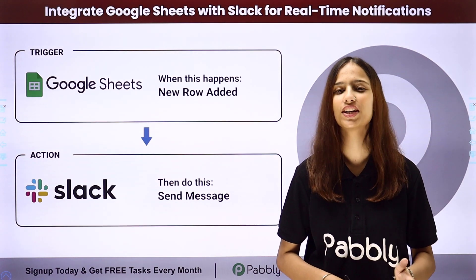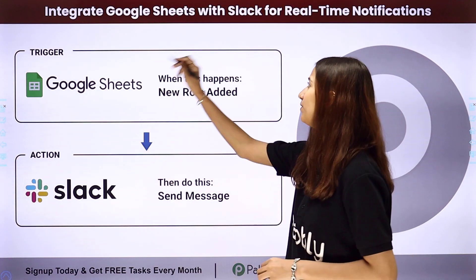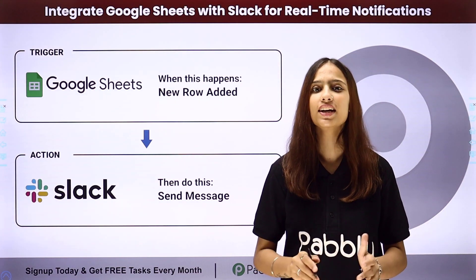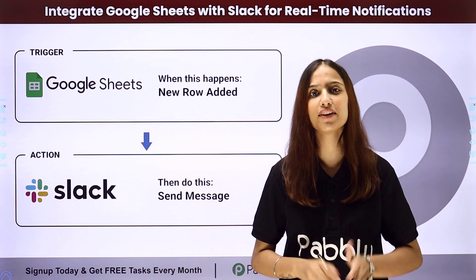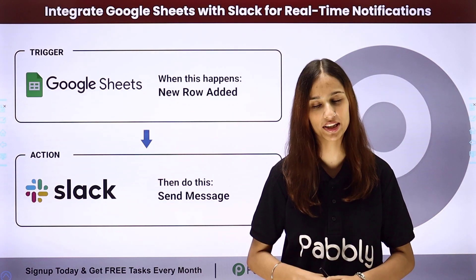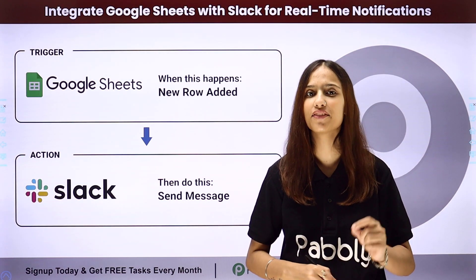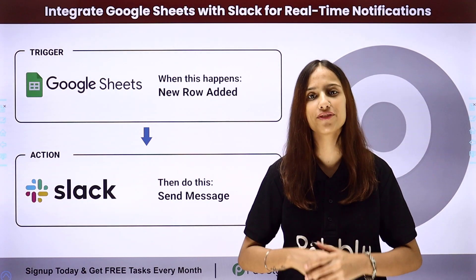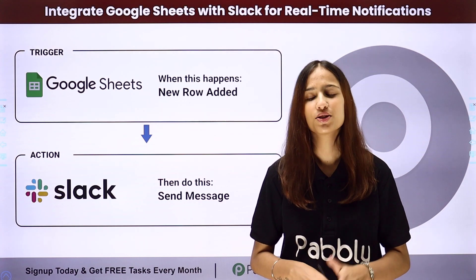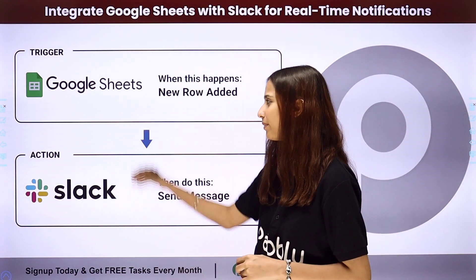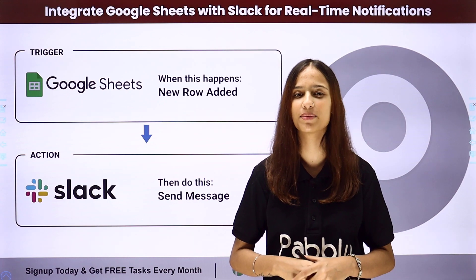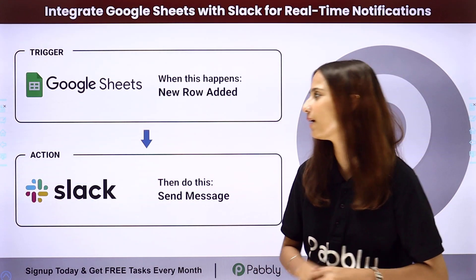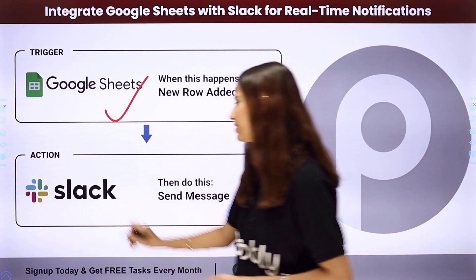Hello everyone, welcome back to Pabbly. In today's video we will understand how to integrate Google Sheets with Slack for real time notifications. Here, let's assume I have created a Google Sheet where I add the details of client meetings. My objective is that whenever I add a new row with the details of a client meeting, I wish to notify my team on Slack. To do this, I need to build an integration between these two applications using Pabbly Connect. My trigger application will be Google Sheets and my action application will be Slack.